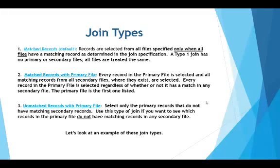There are three join types. The first is matched records, probably the most common one I use. It requires something common between all of the files. With a type 1 join, there's no primary or secondary — they're all treated the same, and you have to have something in common across all joined files.